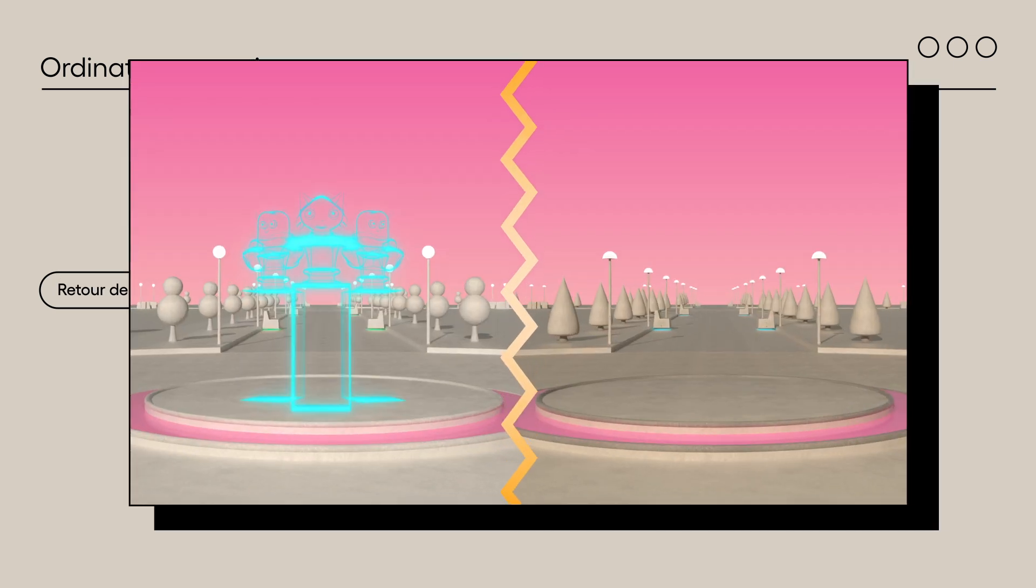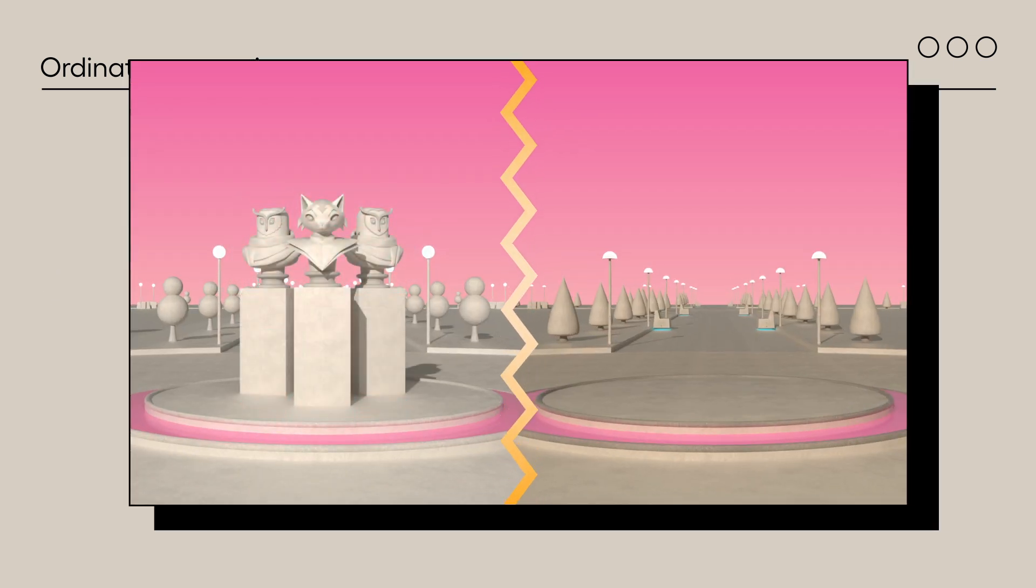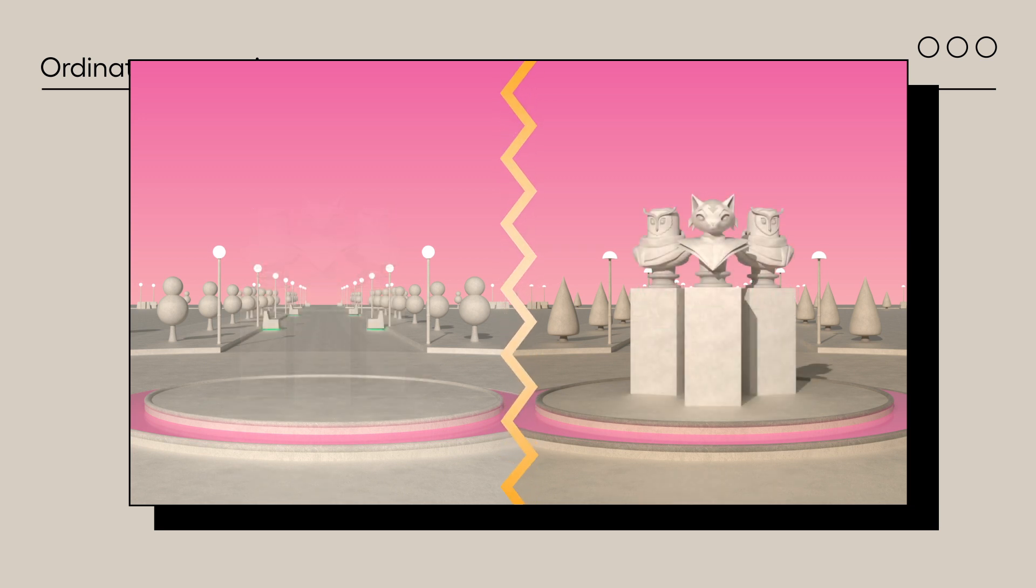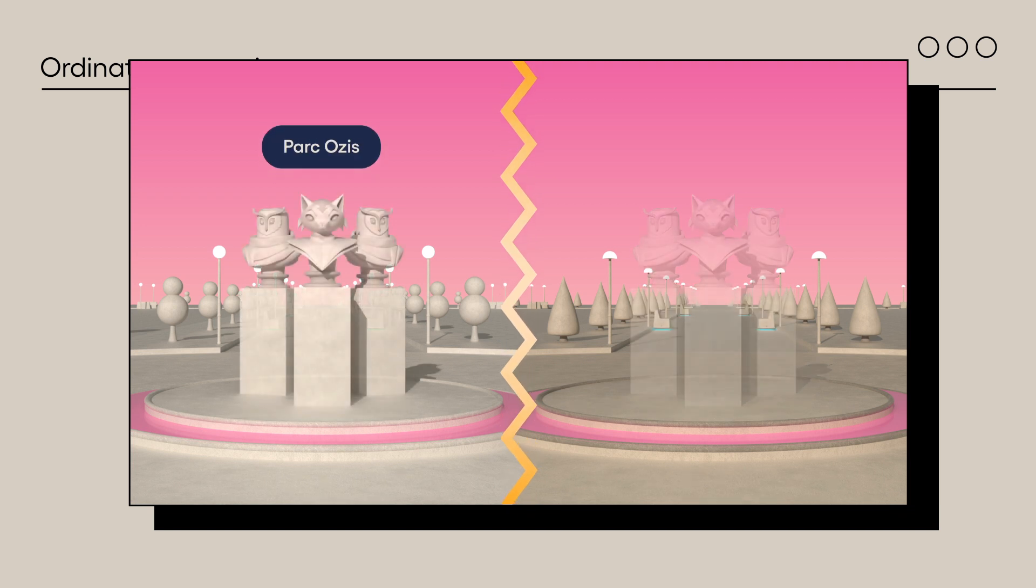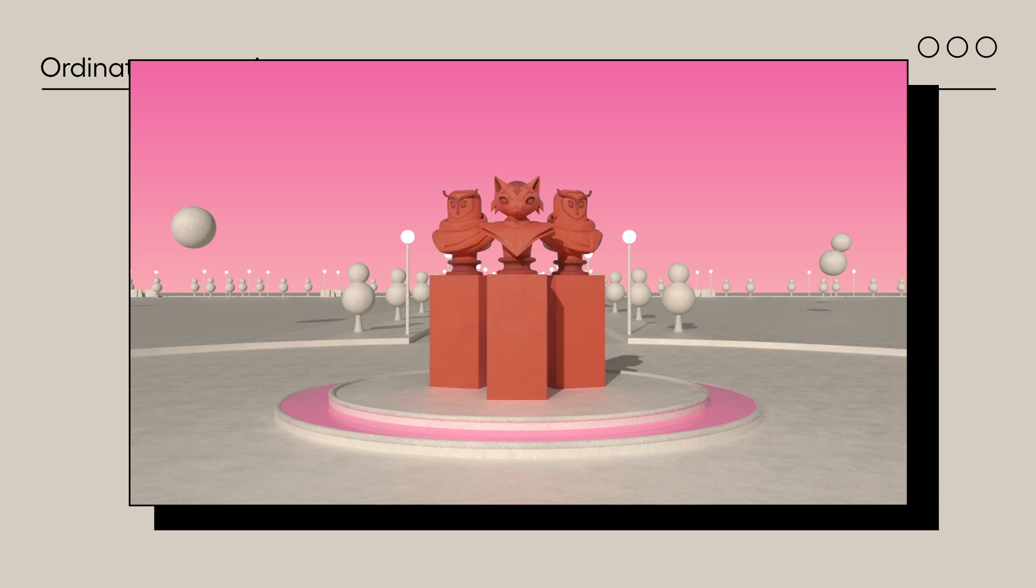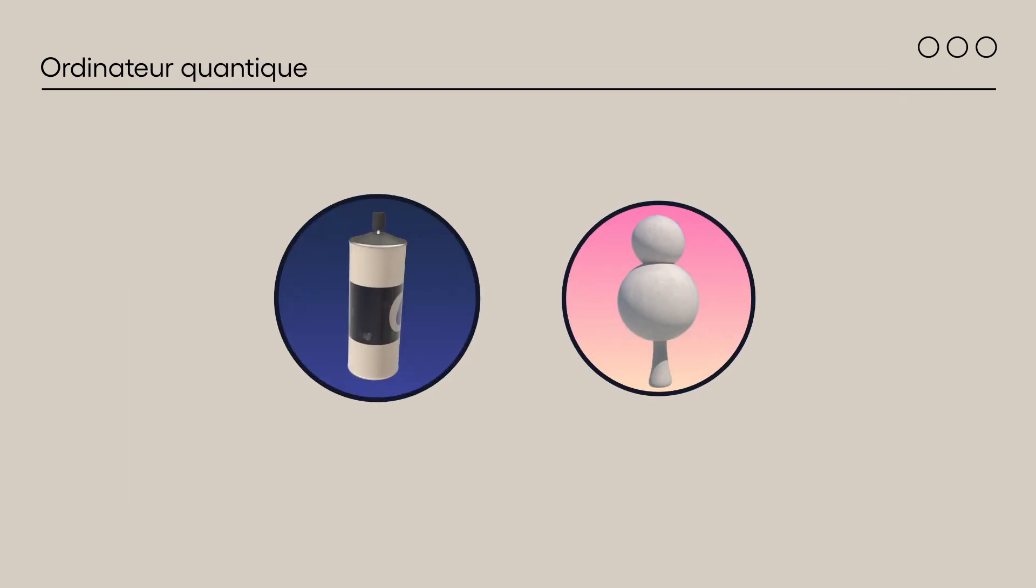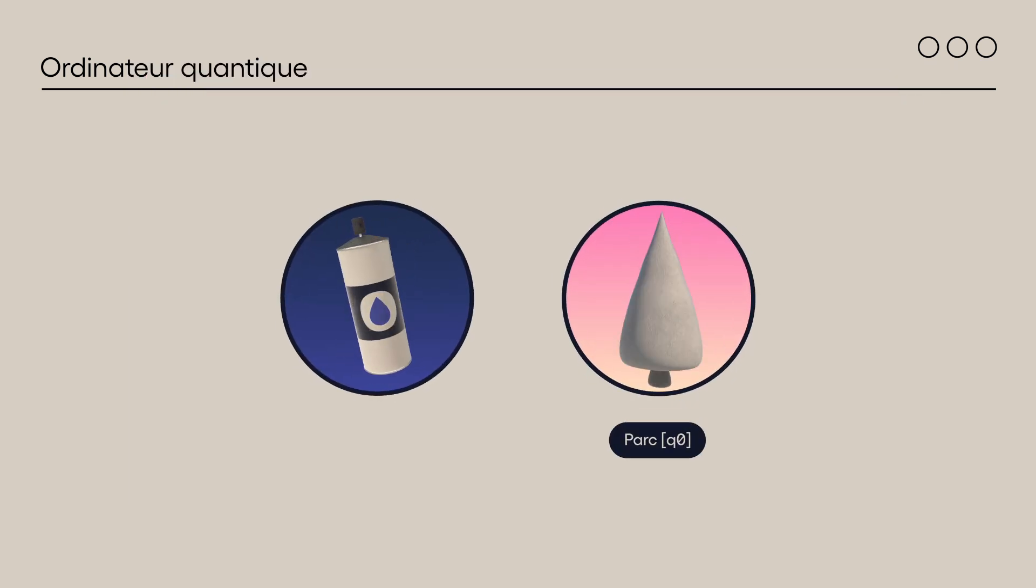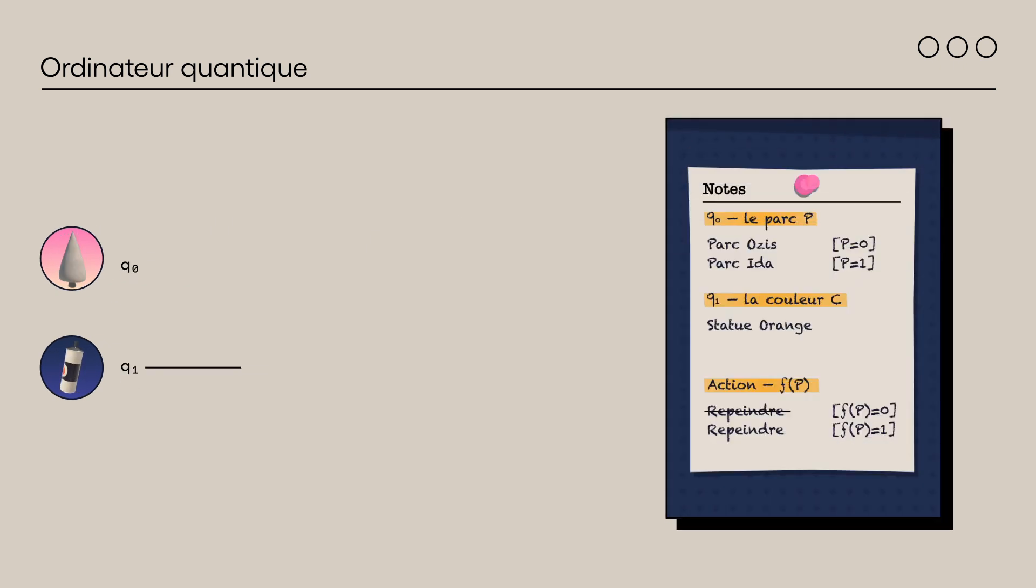La statue quantique dont vous disposez possède des propriétés exceptionnelles. D'abord, elle peut être dans les deux parcs en même temps, c'est-à-dire que l'état de sa position est une superposition de Osis et Ida. Ensuite, elle peut être en superposition de couleurs, soit orange et indigo en même temps. Nous allons décrire la situation à l'aide d'un circuit quantique à deux qubits. Le qubit Q0 détermine dans quel parc se trouve la statue et le qubit Q1 détermine sa couleur. Nous dirons que la couleur orange est 0 et que la couleur indigo est 1.